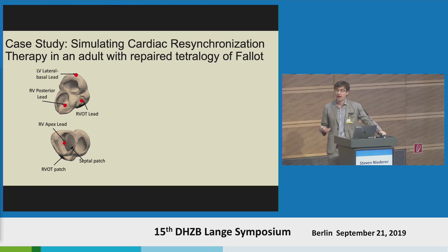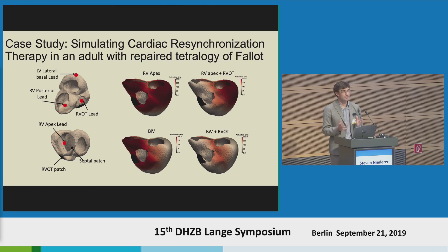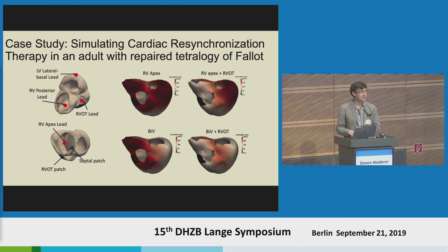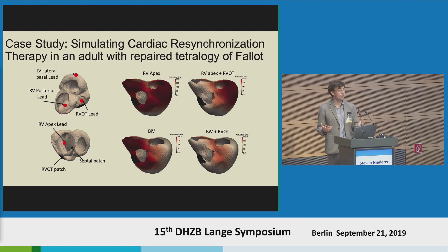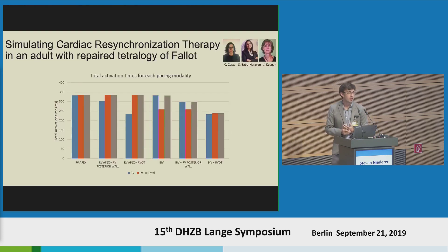We can include the effects of the septal patch from the repair, as well as the RV-OT patch, and include effects of infarcts or different changes in electrophysiology. We can then run simulations at negligible cost — about 10 to 15 minutes — going through multiple permutations: RV apex pacing, RV apex with RV-OT pacing, biventricular pacing, biventricular pacing with RV-OT, and so on. We can identify which configuration gives synchronous activation for both ventricles and evaluate whether this patient's anatomy and repair are likely to respond to CRT.